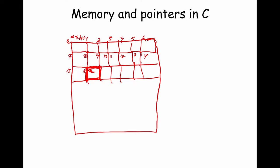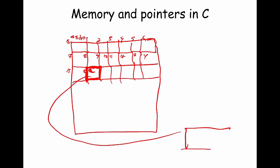When you declare a pointer in C, you're declaring a variable that can store a value — and the value a pointer stores is a memory address. So if A is a pointer and we store the value seven in it (binary 111), that means A is going to point to memory location seven. In C, when you define a pointer and do arithmetic on it — say you increment it — if A contains seven and you add one, A becomes eight and now refers to memory location eight.